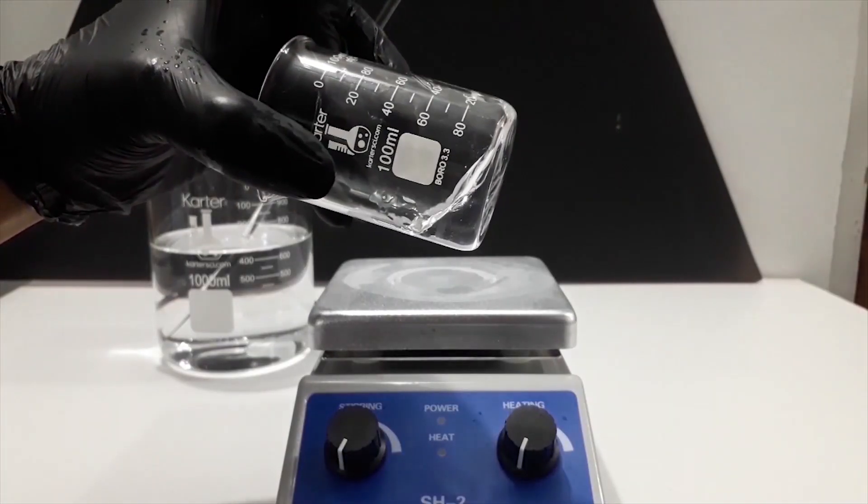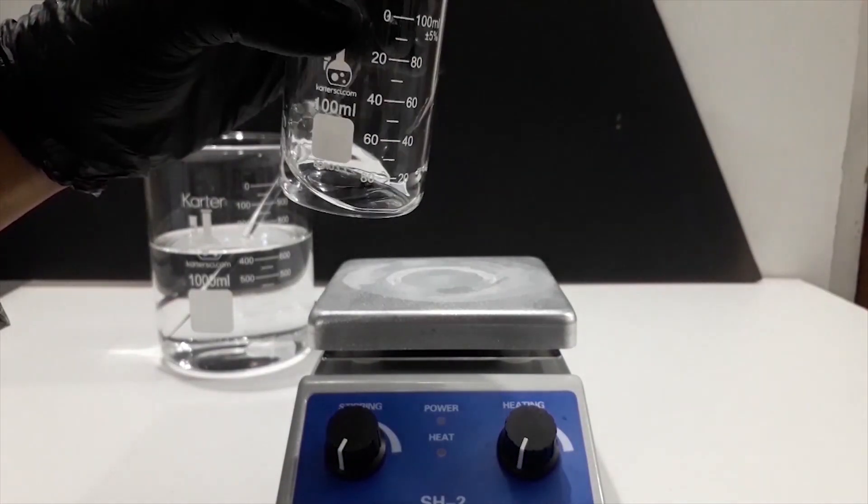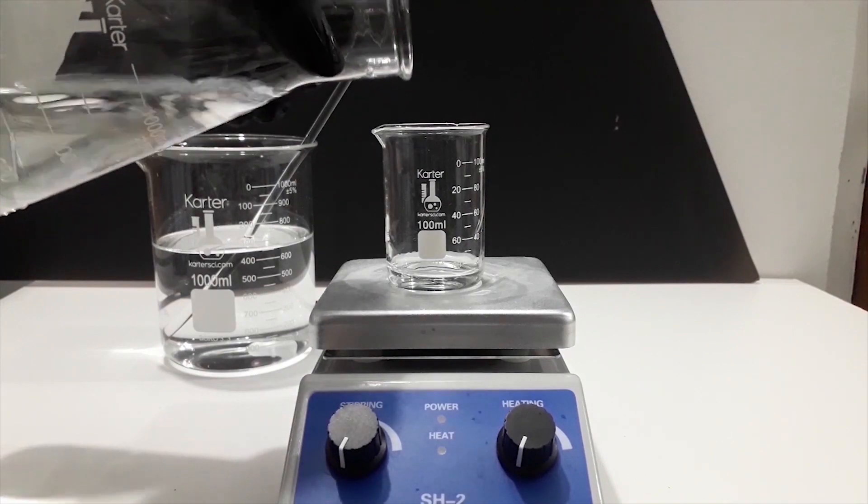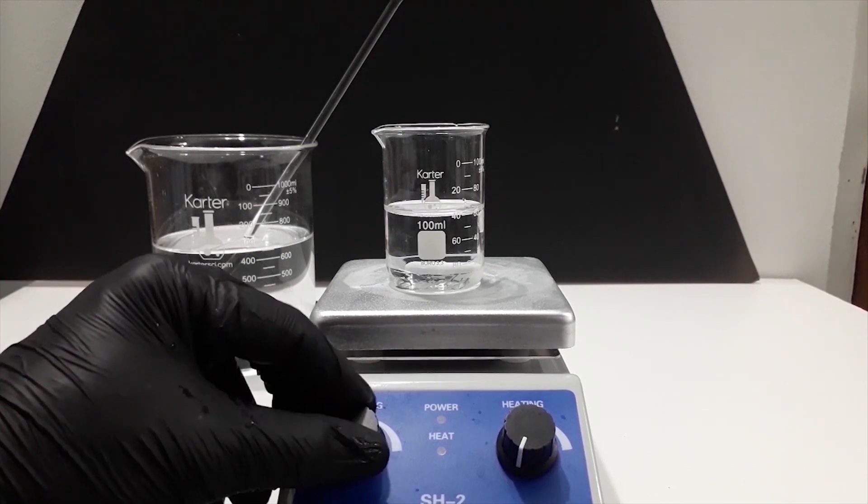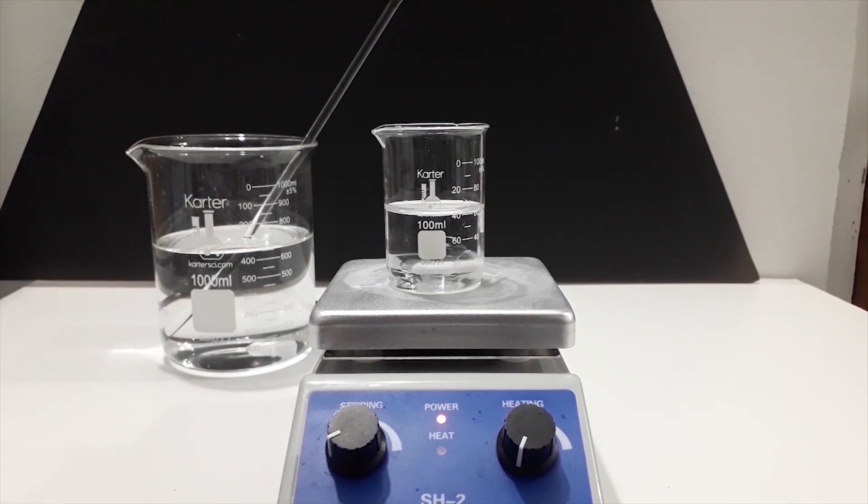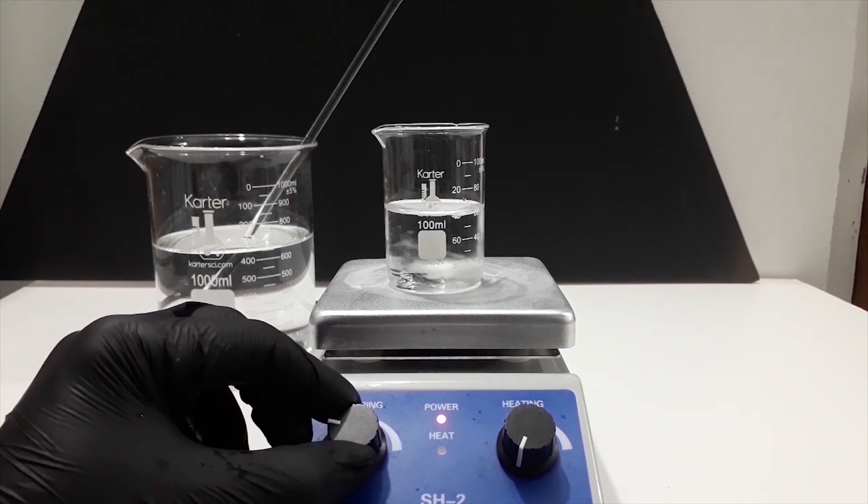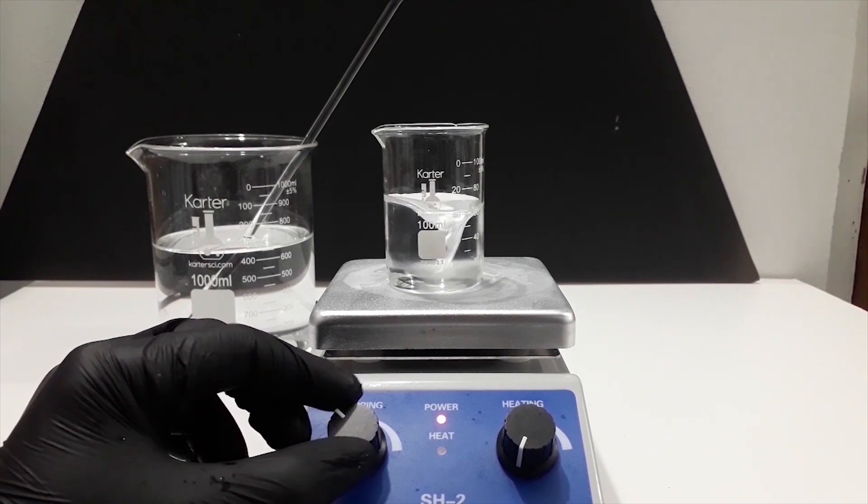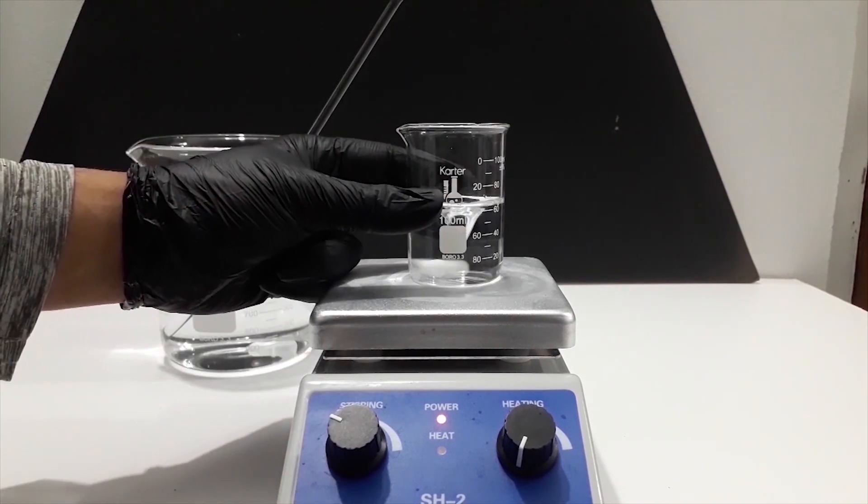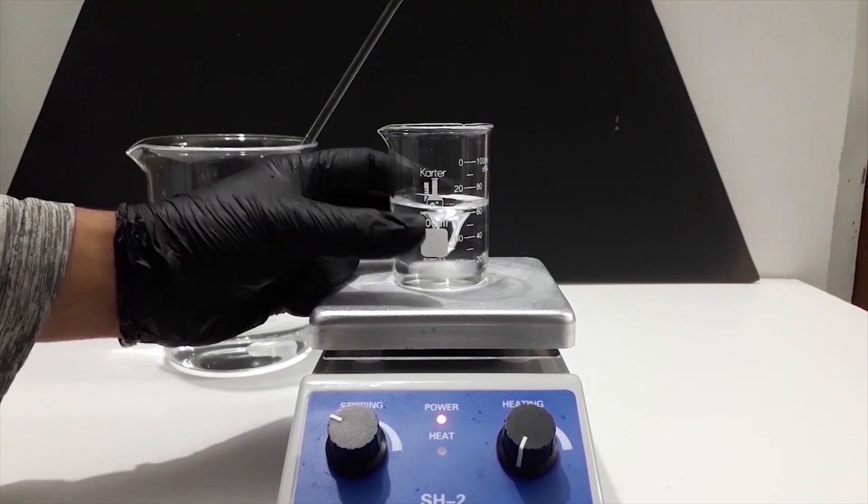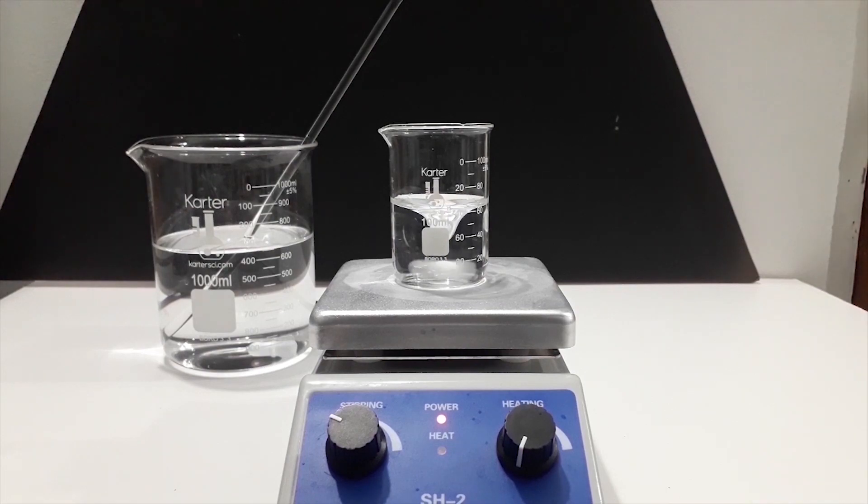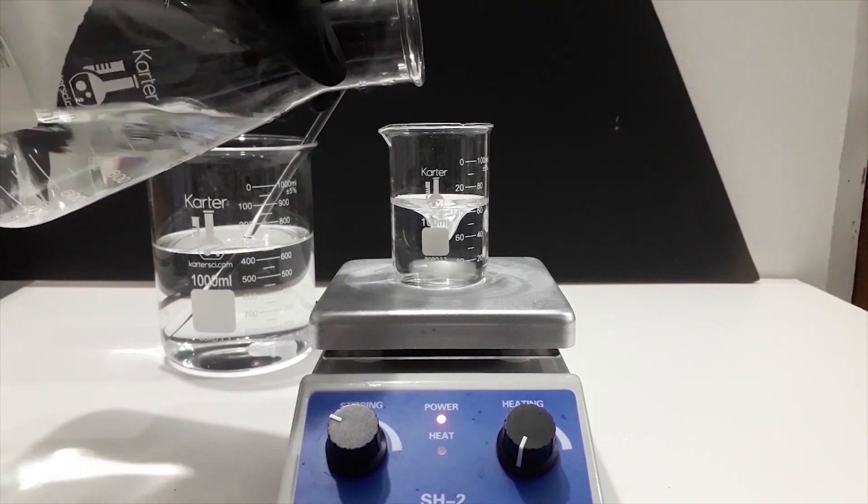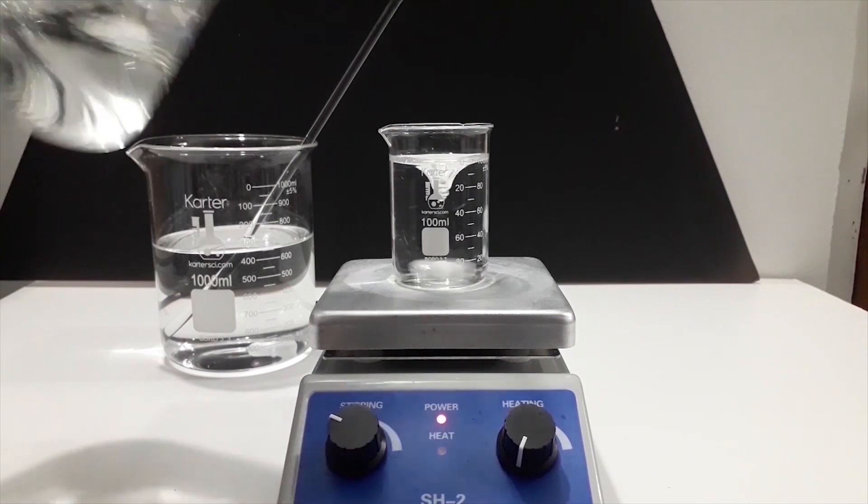Once everything is dissolved, I then weighed out 10 grams of polyquaternium 7. It came out as a viscous fluid, so we need to add water to thin this out. 50 milliliters of water was added and dropped in with a stir bar. Then I turned on the stirring to dissolve it. The beaker was then moved around a bit so the stir bar could get the rest of the goo.